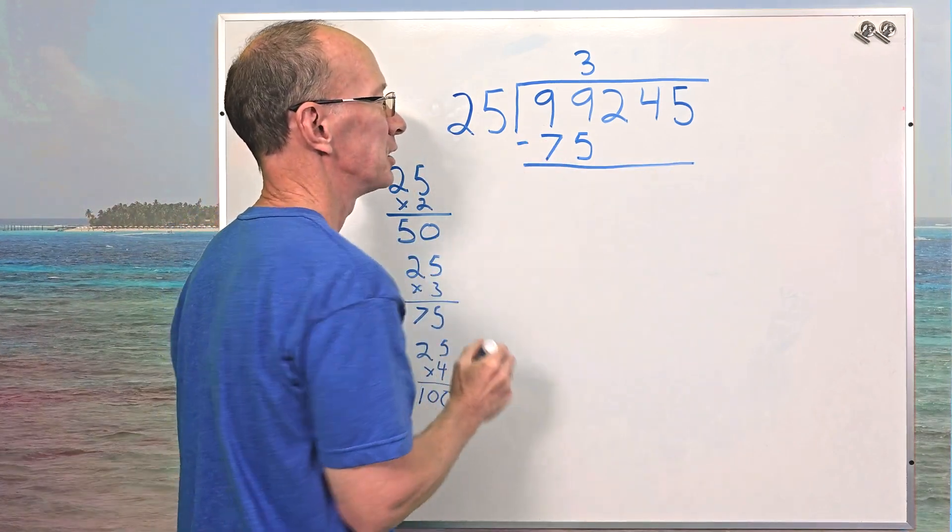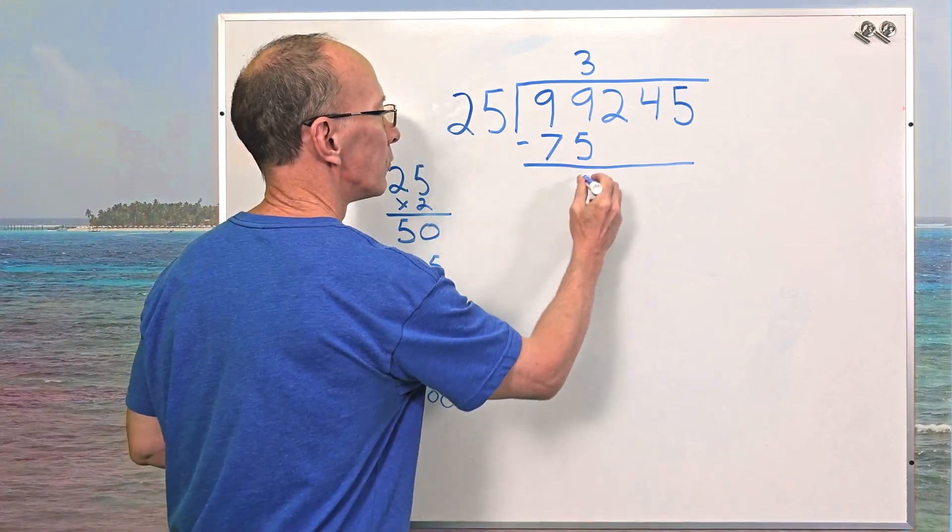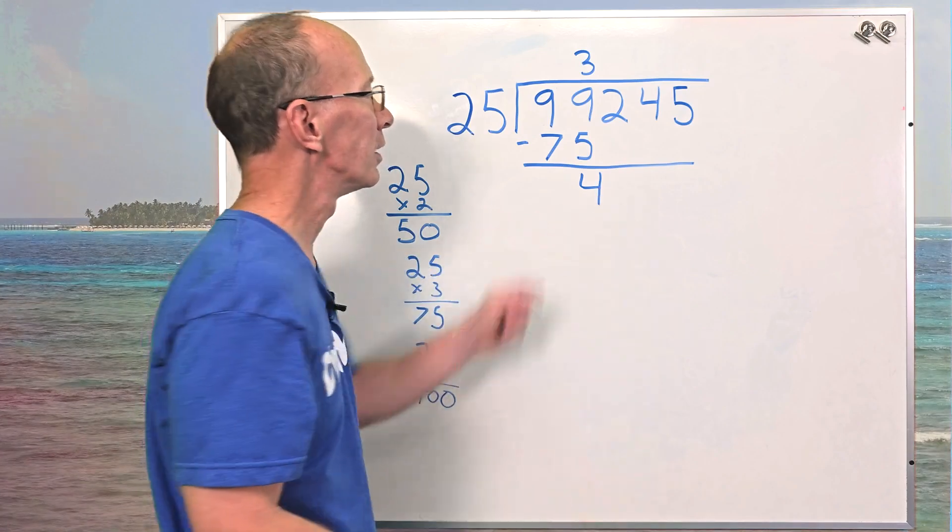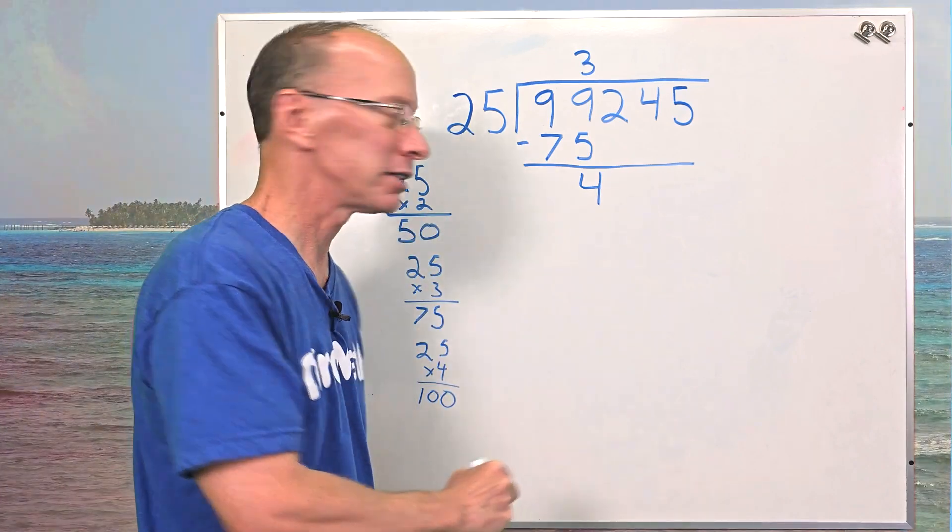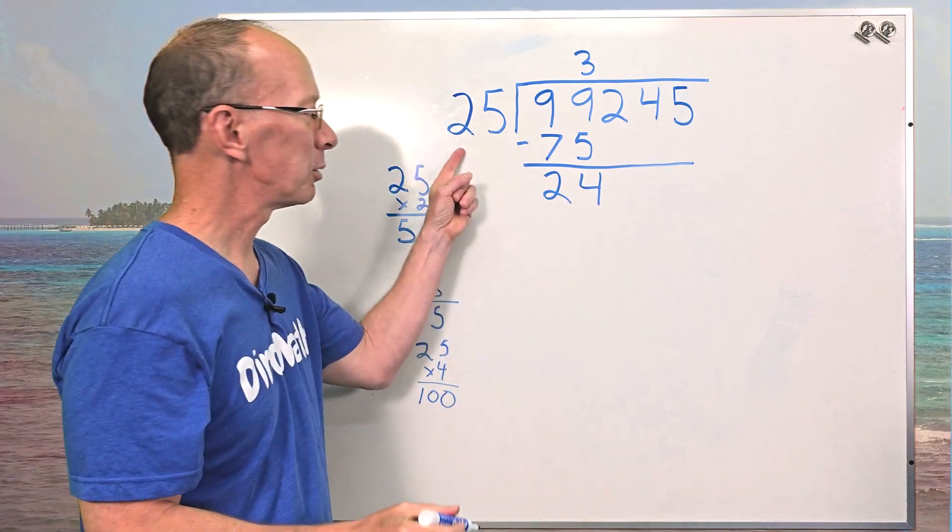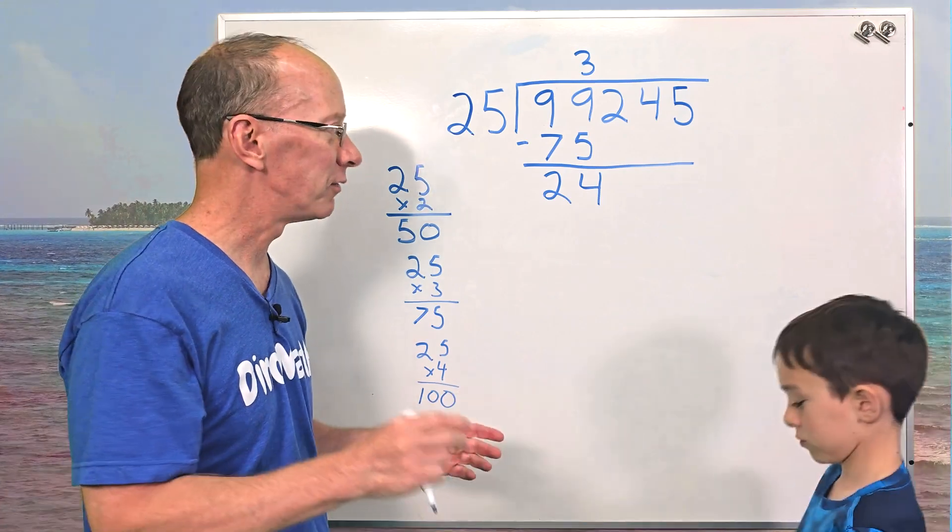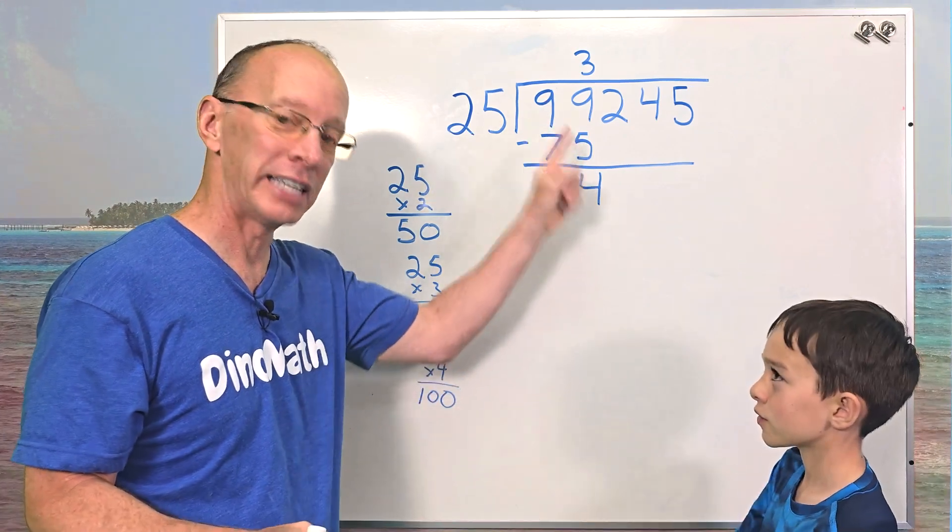All right. So put the subtraction symbol, nine minus five, four. Four, four, out the door, four. Nine minus seven, two, a two-dee-tot, two. So we have 24. Can I put 25 into 24? Can't do it.